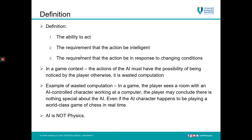In the game context, the action of the AI must have the possibility of being noticed by the players. Otherwise, it is wasted computation. For example, if a player sees a room with an AI-controlled character working at a computer but sees nothing special about that AI — even if the AI character happens to be playing a world-class game of chess in real time — the player may still conclude there is nothing special about it. This is wasted computation. There's no point doing AI for a character if it contributes nothing to the environment or gameplay.